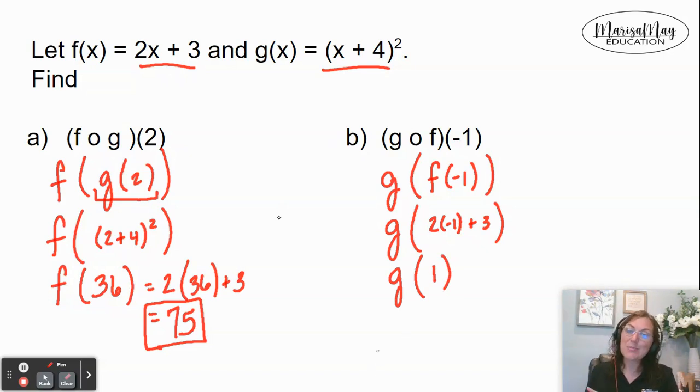This means to replace the x in the g function with 1. So now I've got (1 + 4)². 1 plus 4 is 5, and 5² is 25.